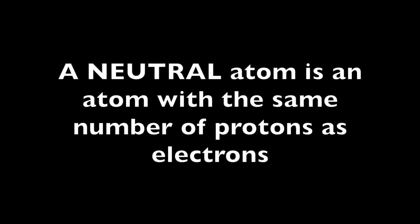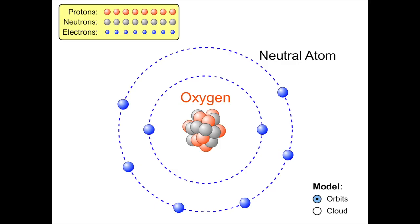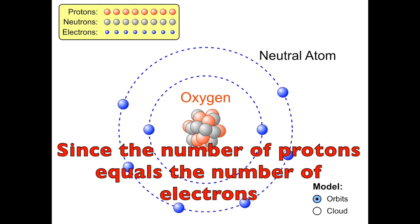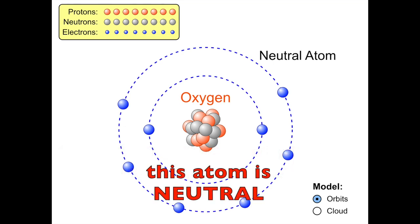A neutral atom is an atom with the same number of protons as electrons. This oxygen atom has eight protons and eight electrons. And since the number of protons equals the number of electrons, this atom is neutral.